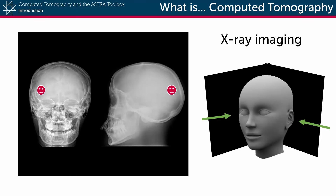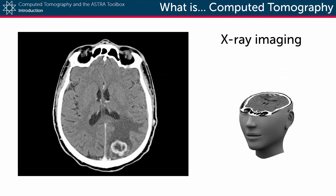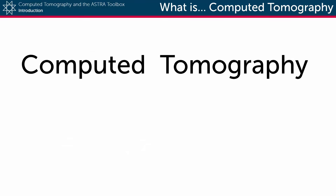To get this information, ideally we want to have a look at a cross-section of Brunilde's brain — the image you would see if you were to open up her head, but preferably without actually doing that. Enter computed tomography.